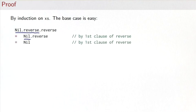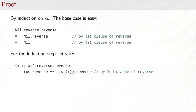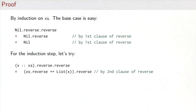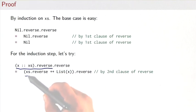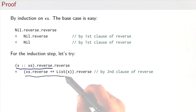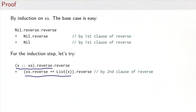For the induction step, we have (x followed by xs) with a double reverse. We can apply the second clause of reverse, rewriting the expression to (xs.reverse followed by x).reverse. Then we have a reverse on both sides, but there doesn't seem to be anything obvious to do from here.